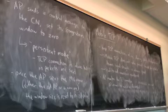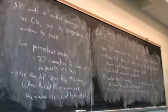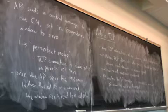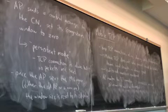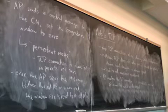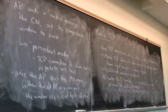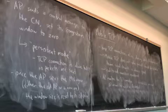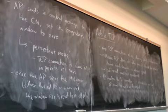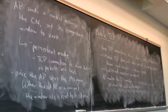Question: when the AP sends the message to set the window size to zero and set it back again, is it masquerading as the mobile node to the corresponding node? I assume it has to pretend it's the other end of the conversation. Yes.